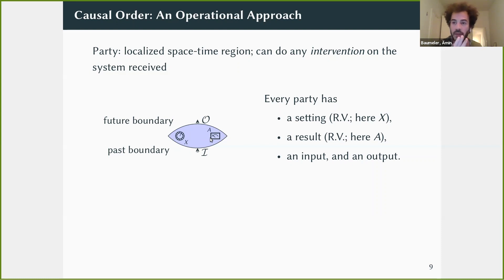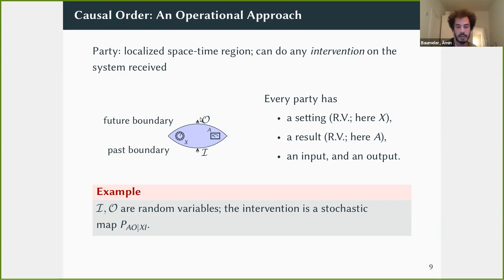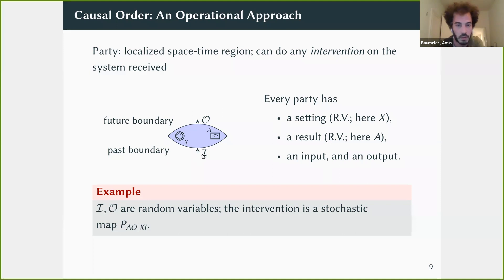In the world where systems exchanged by parties are classical random variables, an intervention is a stochastic map from the party's setting and input to the measurement result and the output. We can also take the input to be a quantum system or even more general systems.